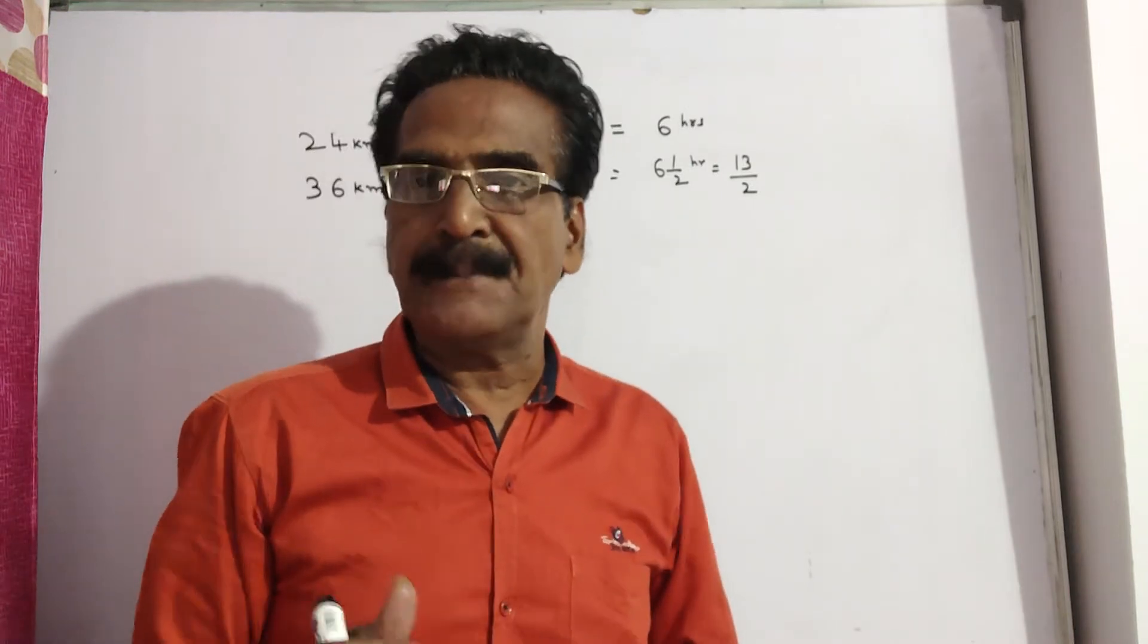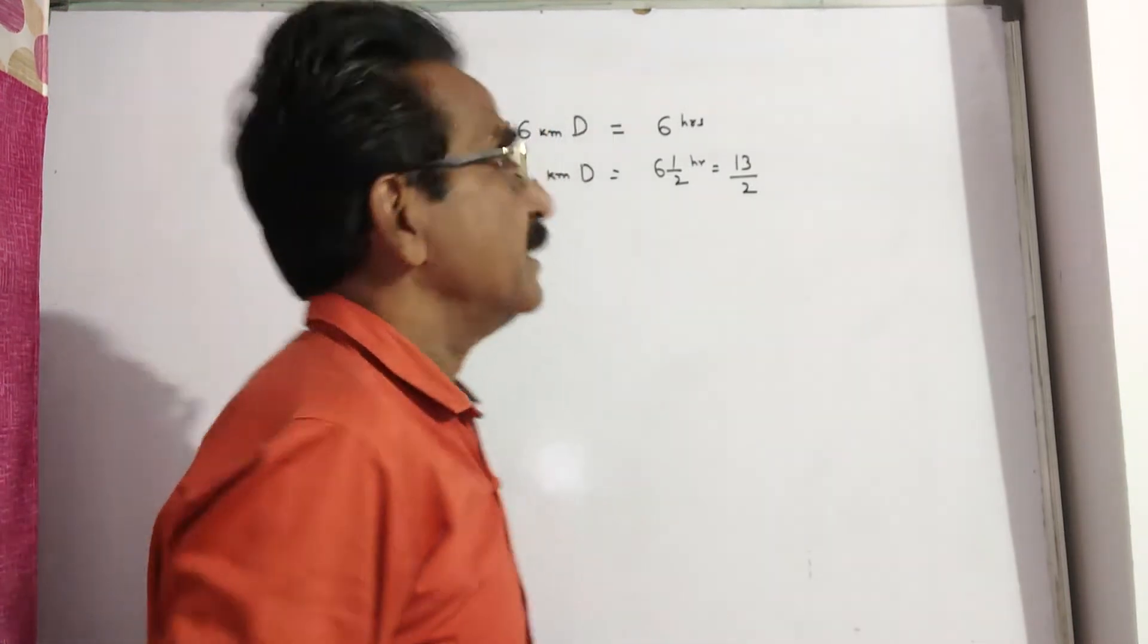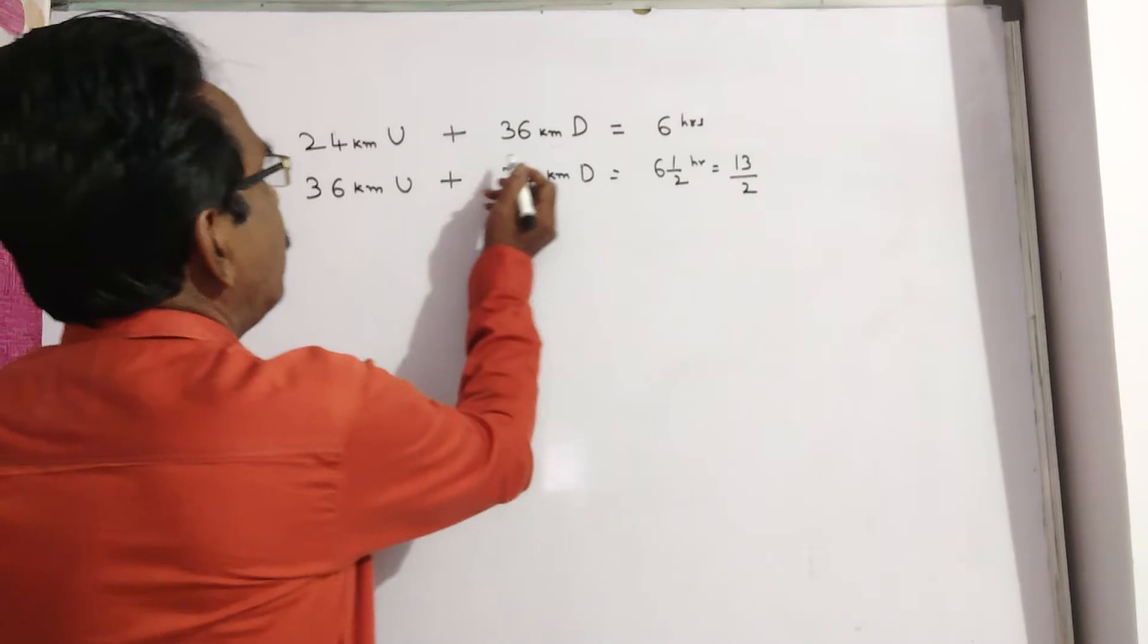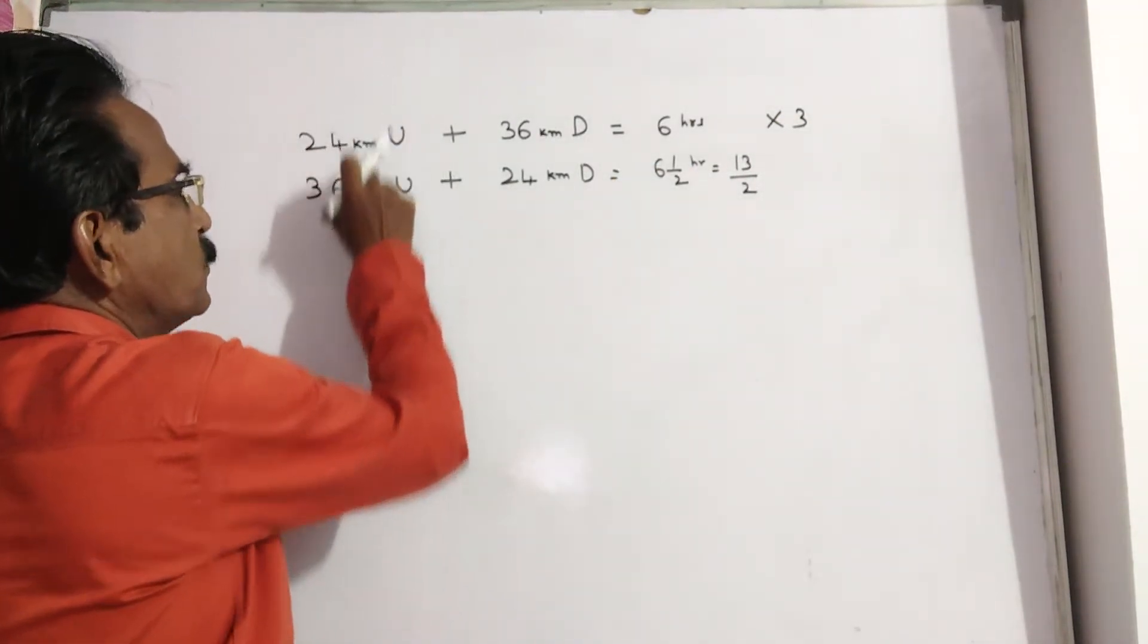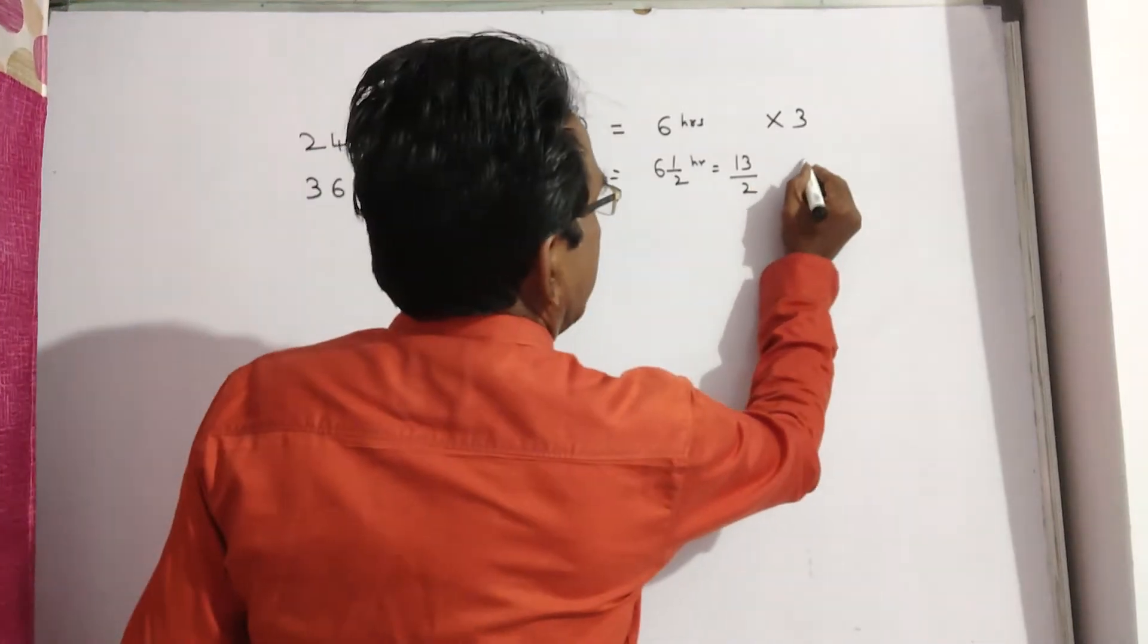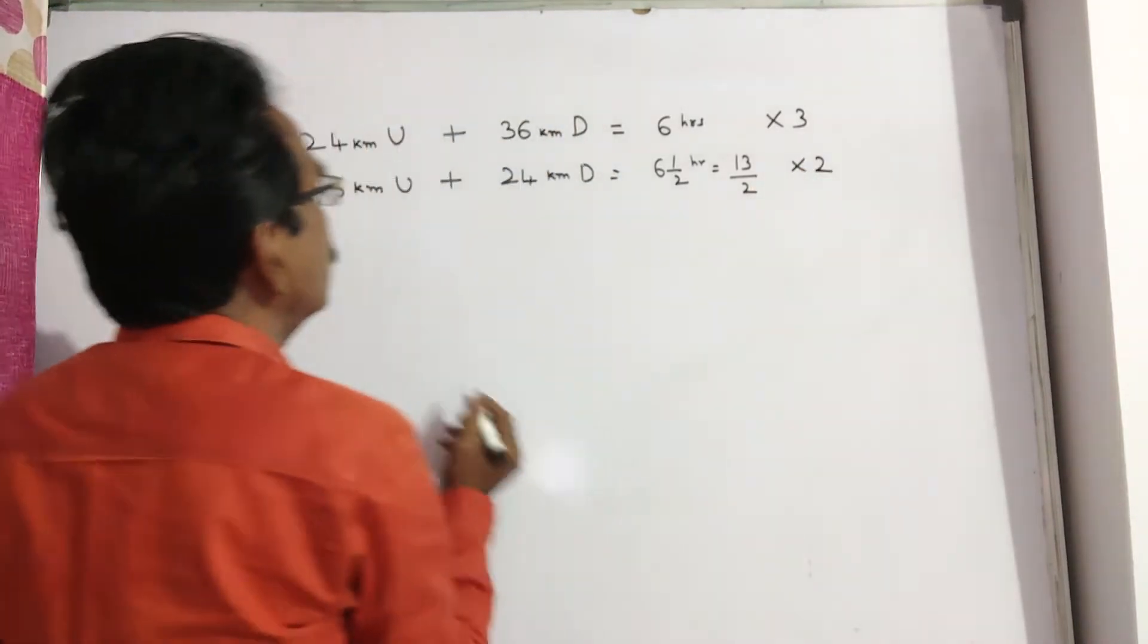Then what is the speed of the stream is the question. See friends, I am multiplying this equation with 3. I am trying to equate these 2 terms. I am multiplying this equation with 2.